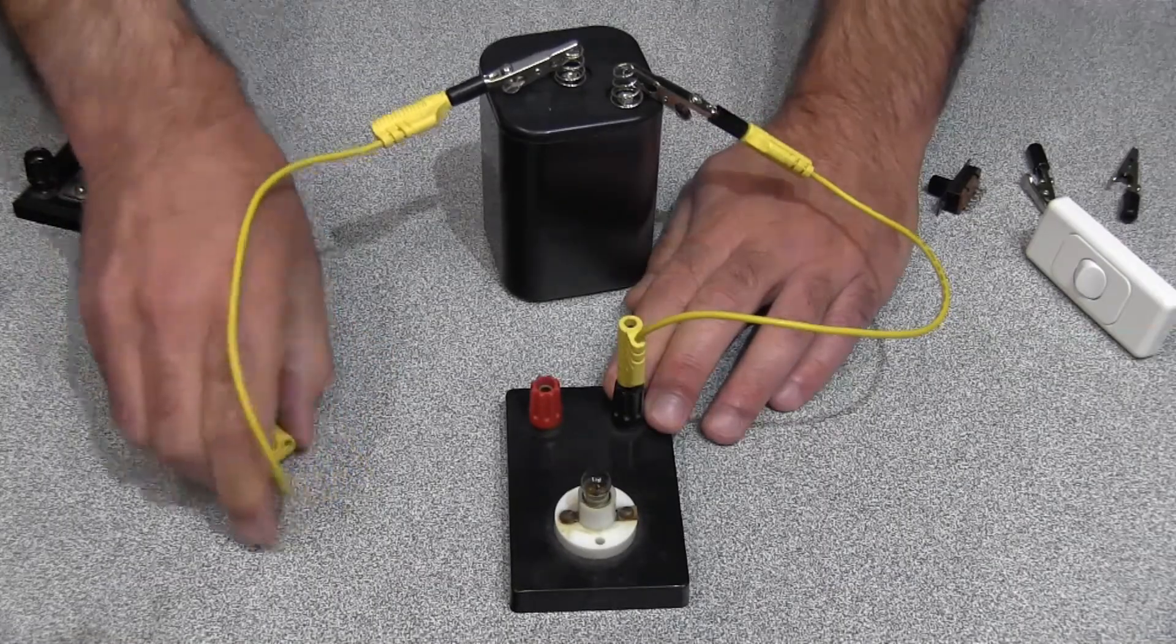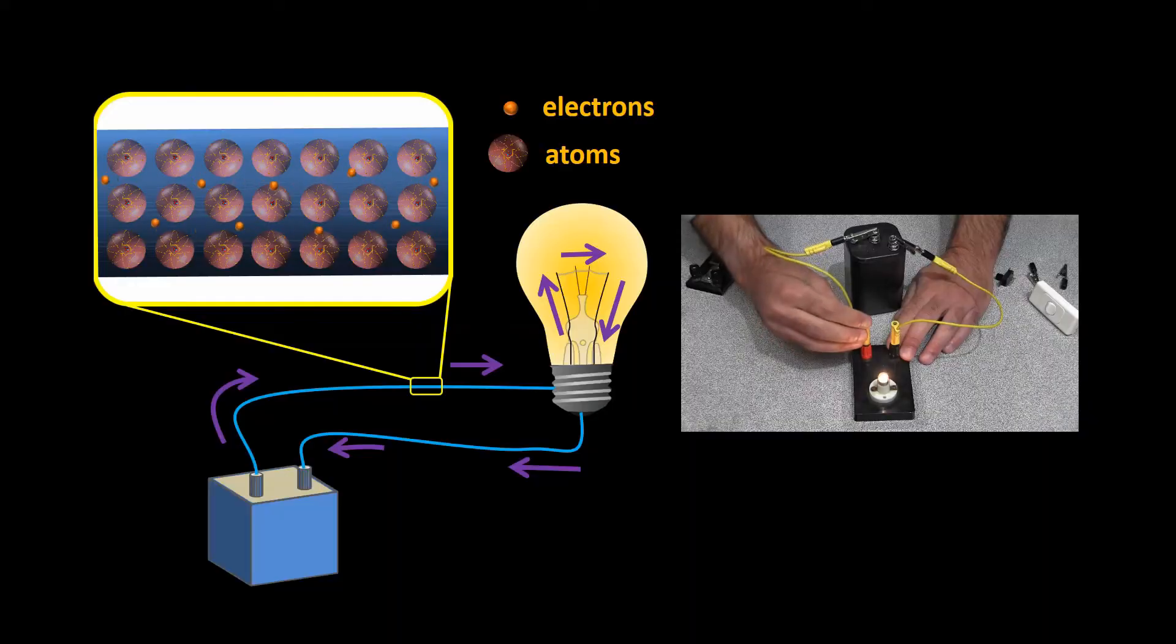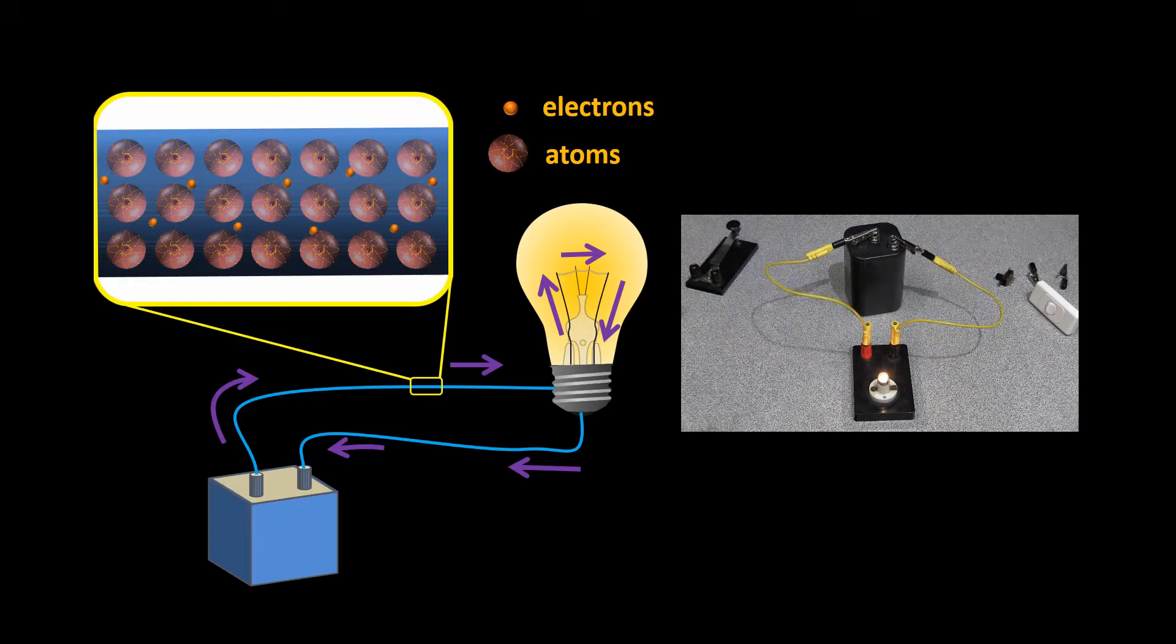Batteries are pretty complicated, but when they're connected, a bunch of chemical reactions occur which push the electrons around the circuit. But the chemical reactions can only occur if the electrons end up going back into the battery through the other terminal.